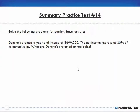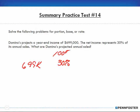Number 14: Domino's projects a year-end income of $699,000. This net income represents 30% of its annual sales. So if I have $699,000 and that represents 30% of annual sales, then annual sales must be 100%. The $699,000 is 30%, which means the remainder has to be 70%.